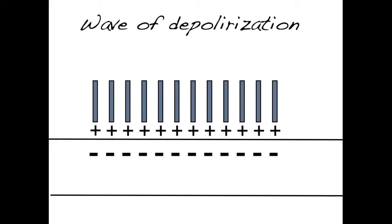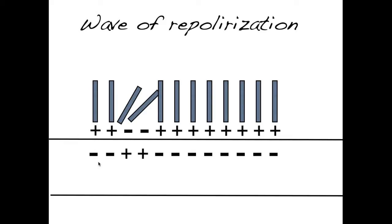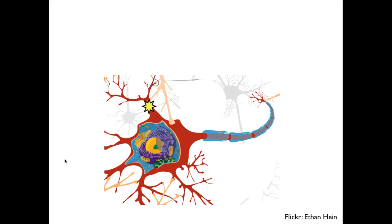We can think of this wave of depolarization like dominoes. When one part of the axon depolarizes, it triggers the rest of the axon to depolarize. Depolarization in one part leads to depolarization in another part, and so on. As one area becomes depolarized, the other area will start to become repolarized — sodium channels close and potassium channels will open up. So we've got a wave of depolarization followed by a wave of repolarization. This occurs so that another action potential can occur very soon after the first one, so one can be immediately followed by another.